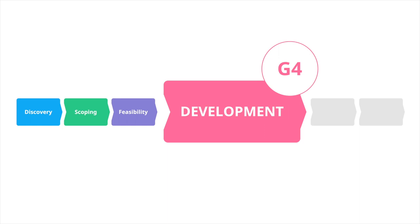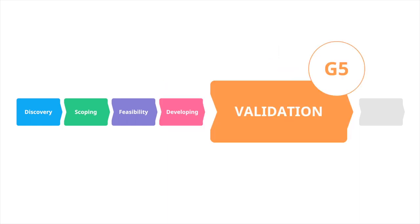The fifth phase is validation. Its goal is to validate the prototype through testing, determining whether it delivers real value and meets the needs and objectives defined in earlier stages. This step is all about polishing rough edges, testing marketing and distribution channels, and testing processes around the product. While early-stage testing took place in the previous phase, now it is time to see the product in action and gather as much feedback as possible, making final tweaks and fixes.